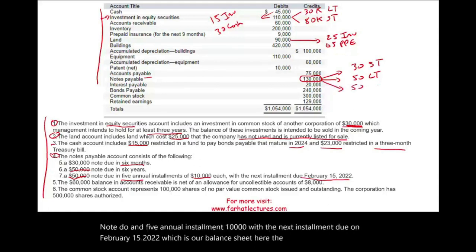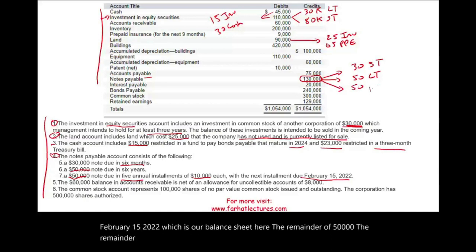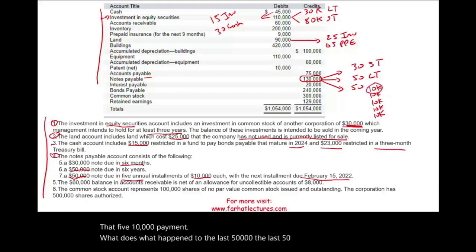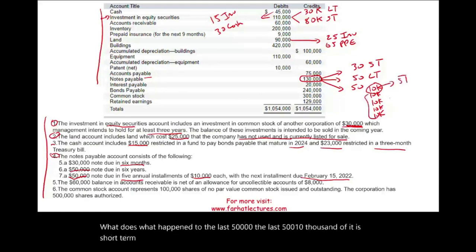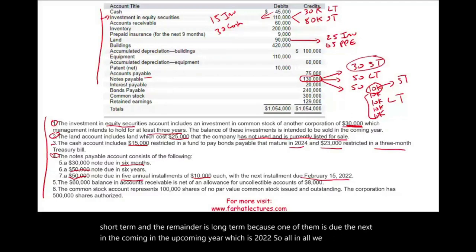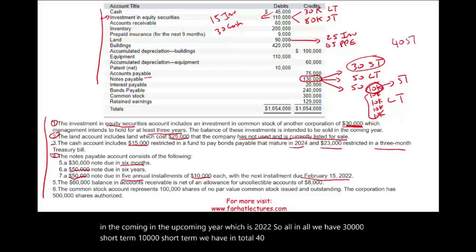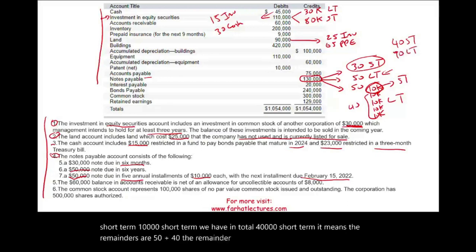Well, the remainder of $50,000, we're going to have to make $10,000 payment. The last $50,000, $10,000 of it is short-term and the remainder is long-term because one of them is due the next in the upcoming year, which is 2022. So, all in all, we have $30,000 short-term, $10,000 short-term, we have, in total, $40,000 short-term. It means the remainders are $50,000 plus $40,000, the remainder $90,000 is long-term. So, we took care of number four.